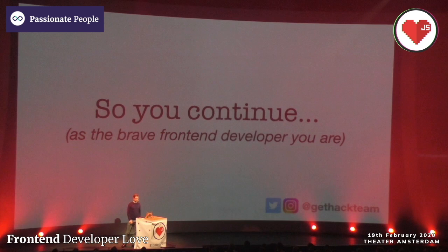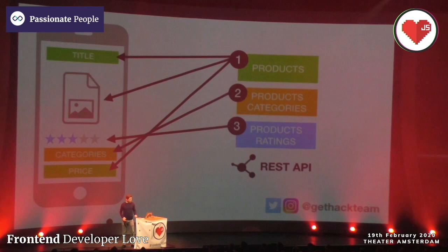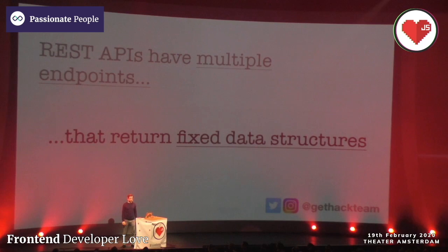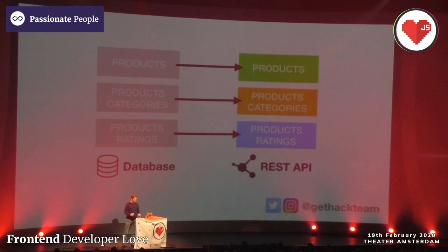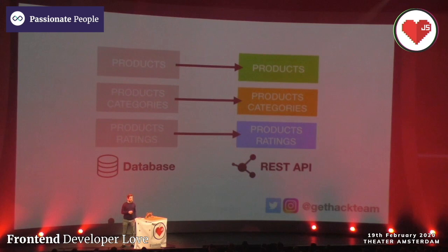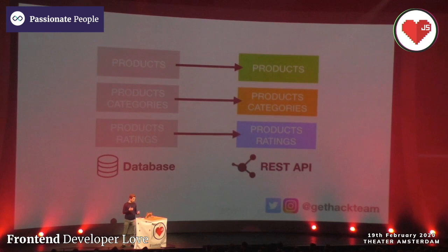To fill this UI you need three separate endpoints that return data. Those endpoints return fixed data structures — that's another specification of REST APIs. It won't only expose data through different endpoints, it will also give you fixed data structures. Most of the time REST endpoints are a one-to-one translation of your database. So your products endpoint will probably return all the data found in a products table, and the same goes for categories and ratings. Those endpoints are directly coupled to one of the tables in your database.